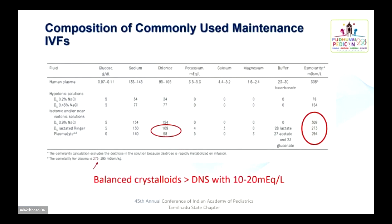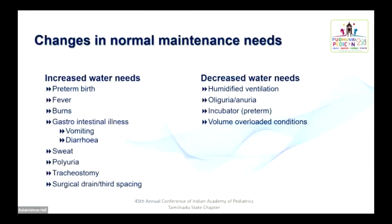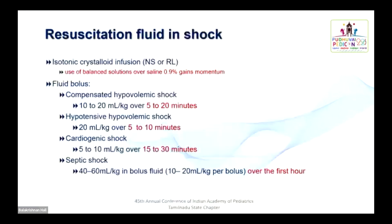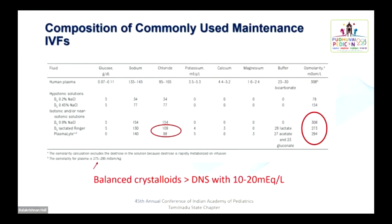Regarding IV fluid composition: isotonic fluids are those whose osmolarity is equal to plasma osmolarity. These include normal saline, Ringer's lactate, D5 normal saline, D5 Ringer's lactate, and Plasma-Lyte. Hypotonic salines include half normal saline and 0.2% NaCl.